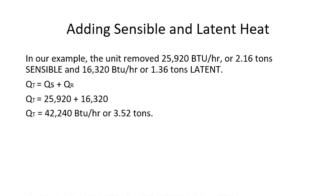Let's talk about adding sensible and latent heat together. In our example, the unit removed 25,920 BTUs per hour of sensible and 16,320 BTUs of latent heat. To calculate total heat, we just add those two numbers together — sensible plus latent — and we arrive at 42,240 BTUs per hour, or 3.52 tons.